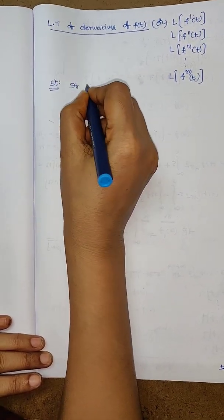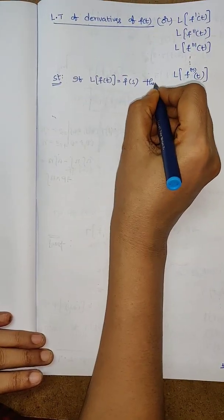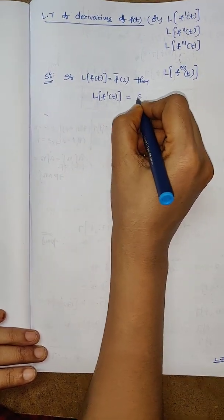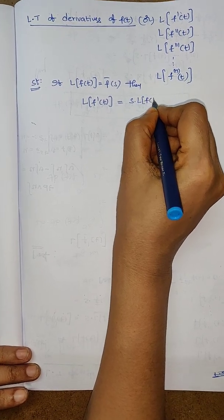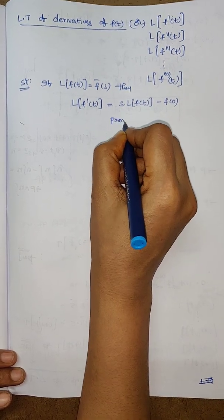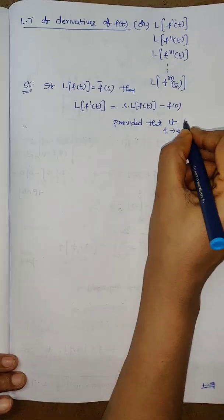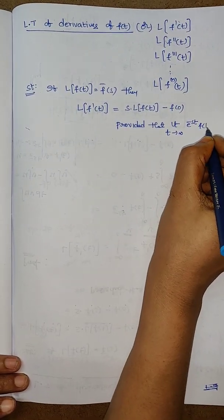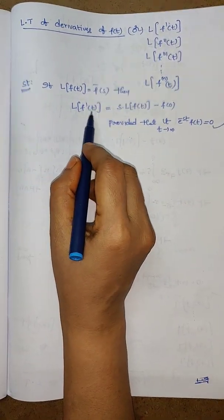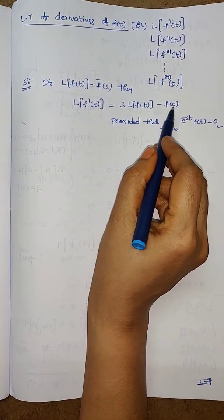The statement is: if L{f(t)} = F̄(s), then the Laplace transform of f dash of t equals s into Laplace transform of f of t minus f of 0, provided that the limit as t tends to infinity of e power minus st times f of t equals 0. Together with this condition we prove L{f'(t)} = s·L{f(t)} - f(0).